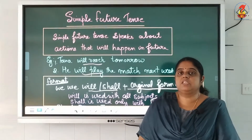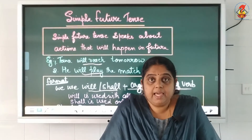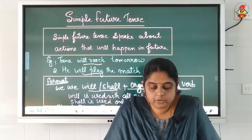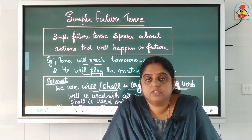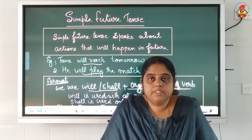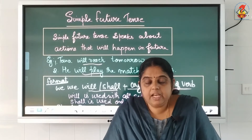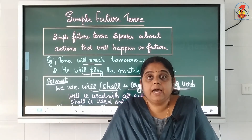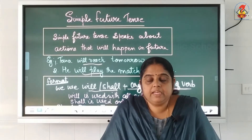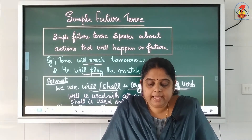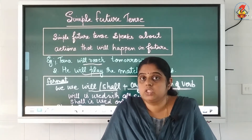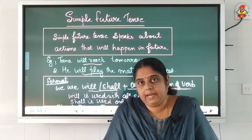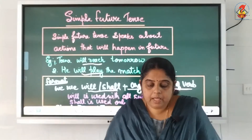On page number 73, Exercise B: fill in the blanks with the future tense of the verbs given in brackets. First one: 'I dash home by 5 PM' — the verb given is reach. Since the subject is I, we use shall: 'I shall reach home by 5 PM.' The next one also starts with I: 'Today, I shall stay at my aunt's place.' Whenever I or we is the subject, you have to use shall. Try the rest yourself.